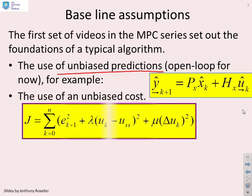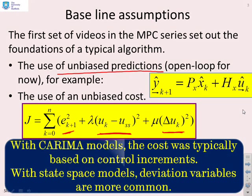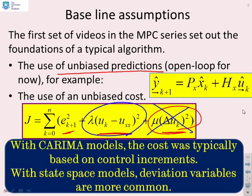We needed the use of an unbiased cost, and a typical cost might be sum of error squared, differences between the input and the steady state squared, and changes in the input squared. Now, with CARIMA models, the cost was typically based on control increments. However, when you're using state-space models, it's actually far easier to use the input deviations rather than the input increments, and so that tends to be more common.